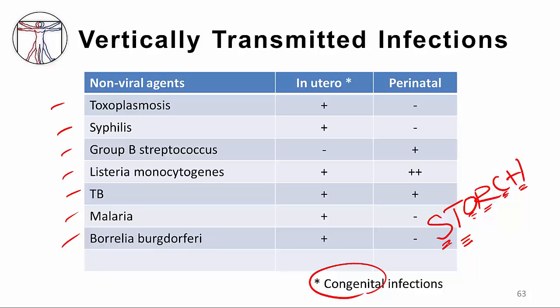I'm not a big fan of this mnemonic because not all of the infections in STORCH or TORCH are acquired in the same way. For example, rubella may be acquired either congenitally or perinatally, and as I've emphasized, herpes is more often acquired perinatally.